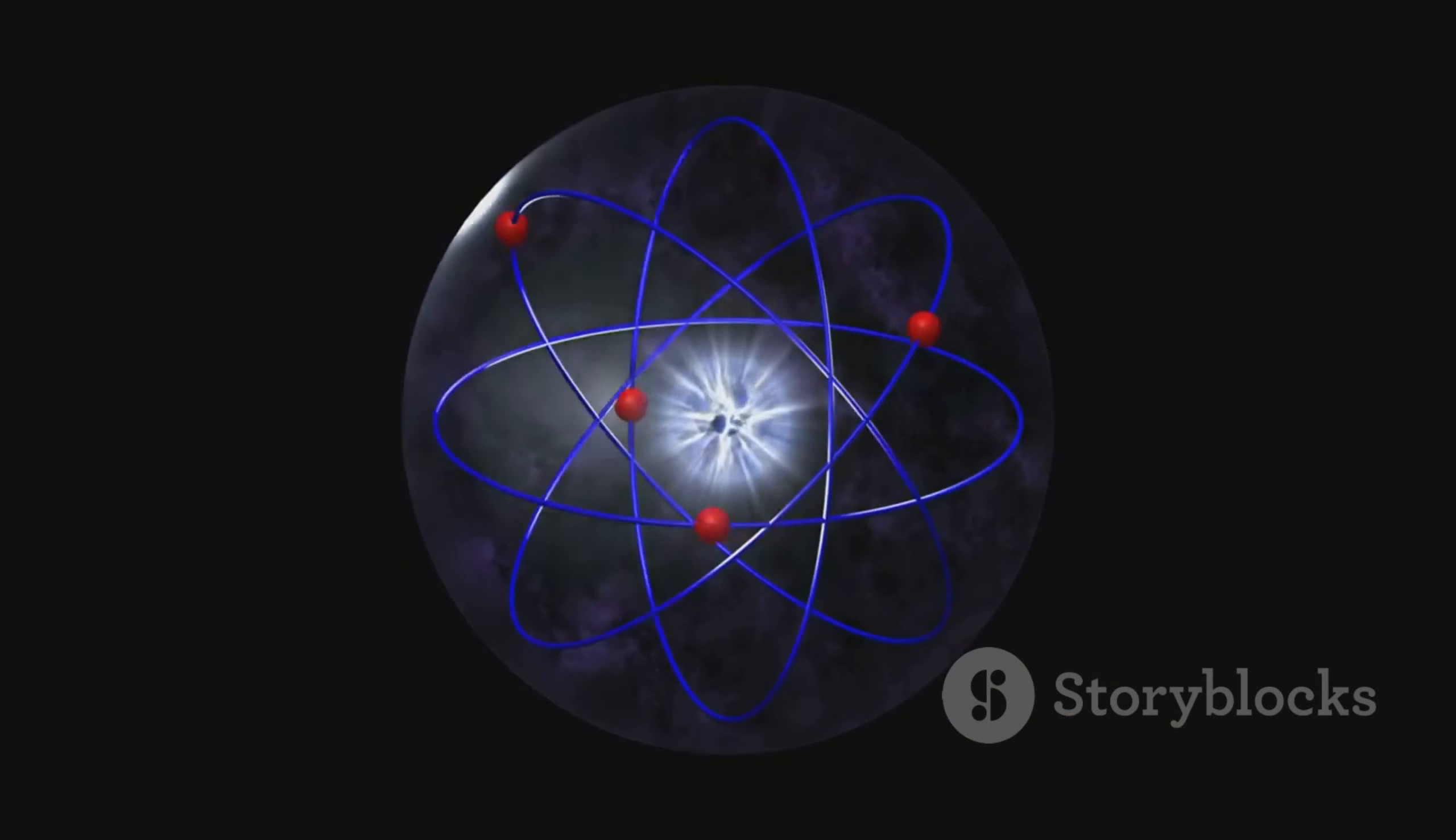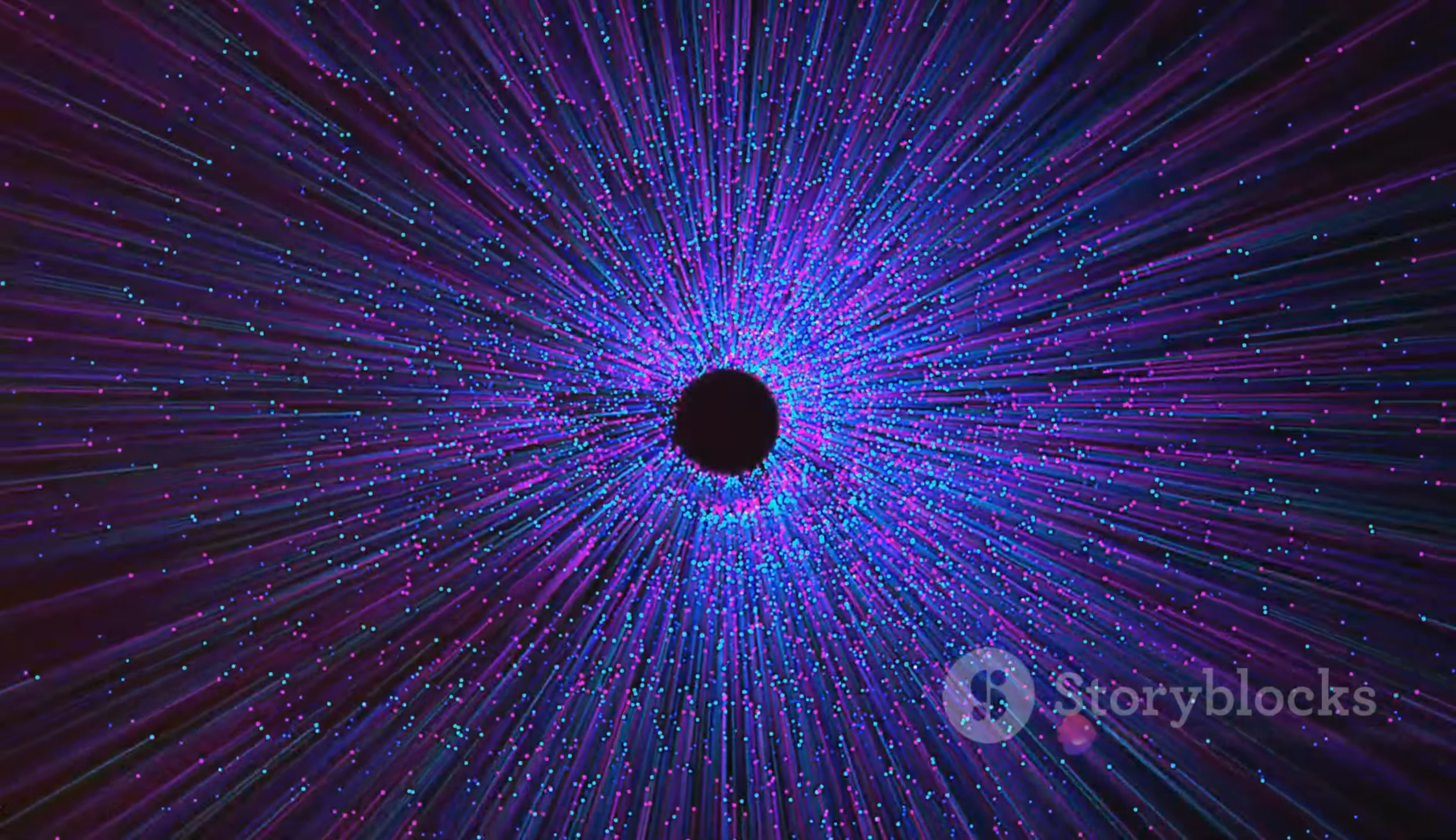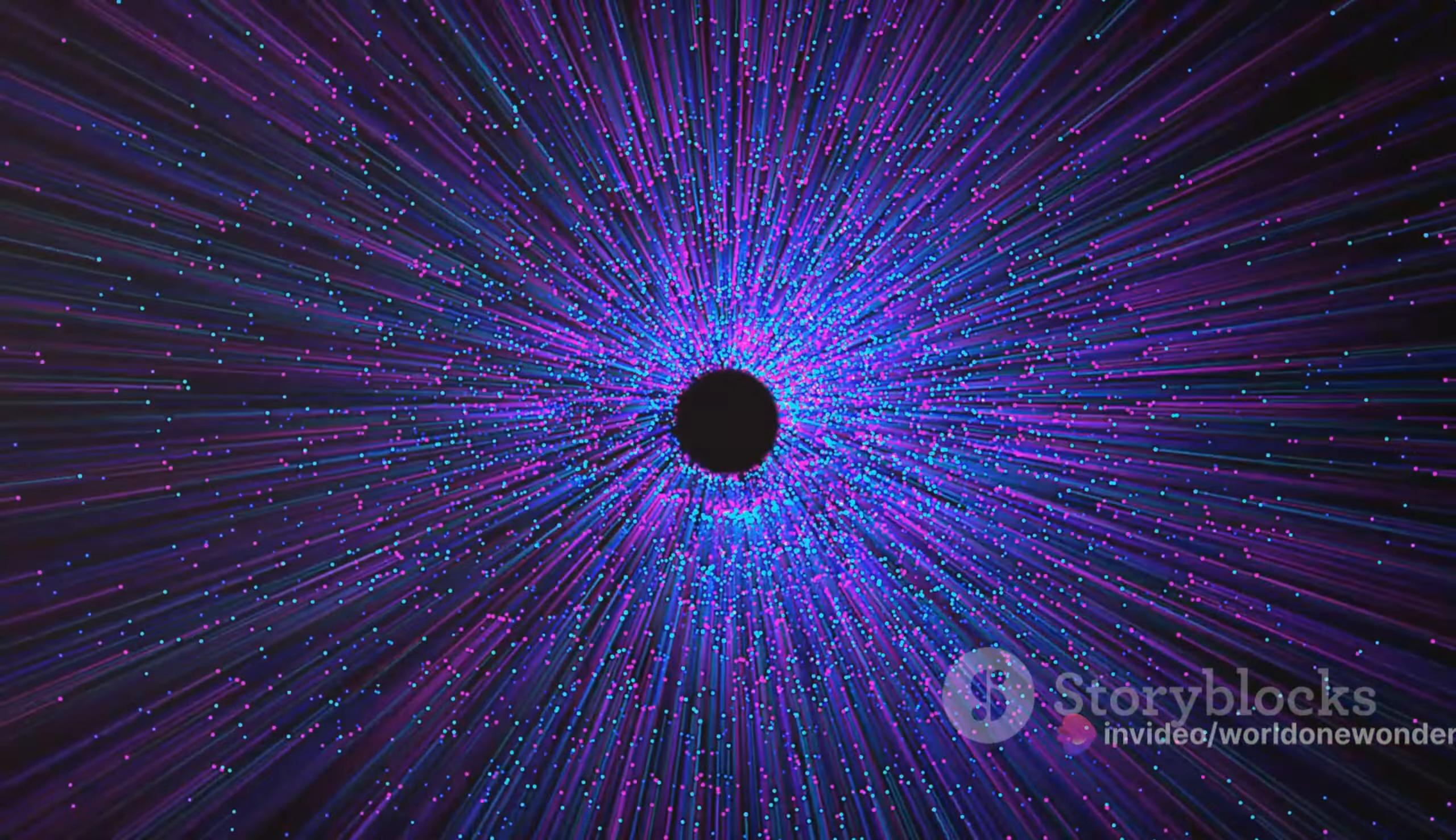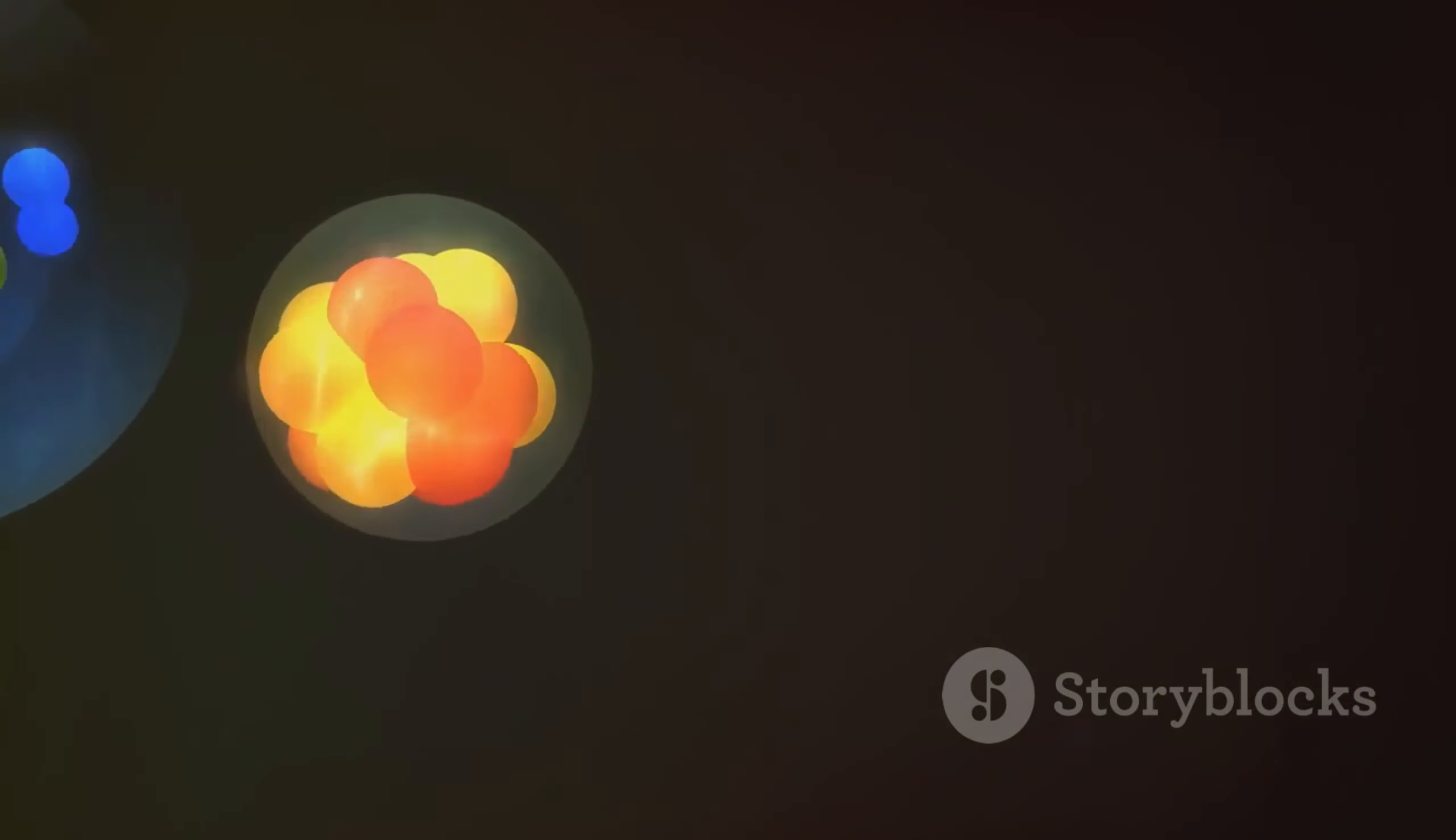They barely interact with other particles, enabling them to pass through vast amounts of matter without being affected. Imagine holding up a light year of lead against a neutrino. This ghostly particle would pass right through it, unphased and undeterred. This remarkable ability is why billions of neutrinos from the sun and other cosmic sources pass through our bodies every second, unnoticed and harmless.